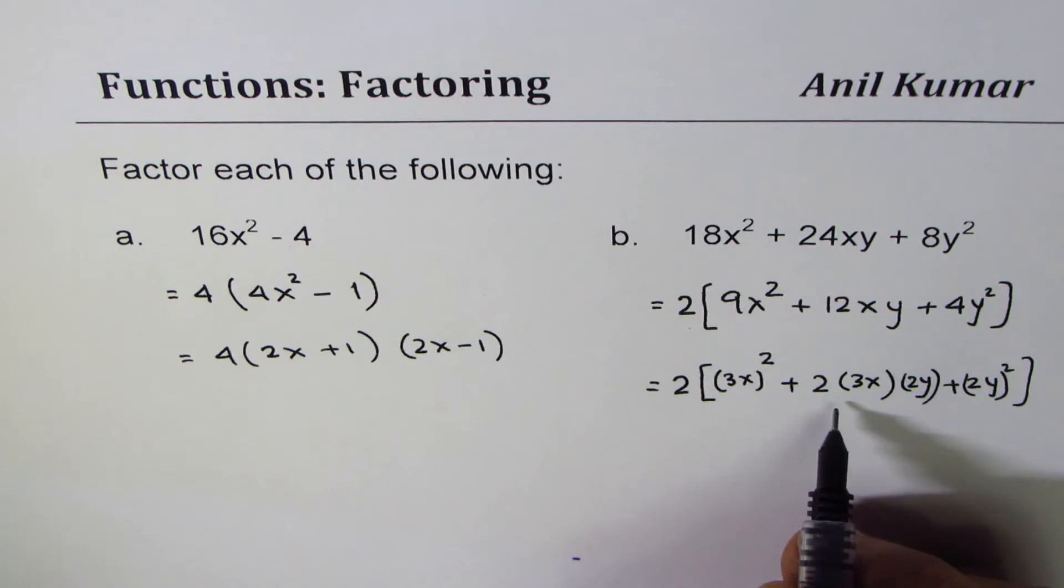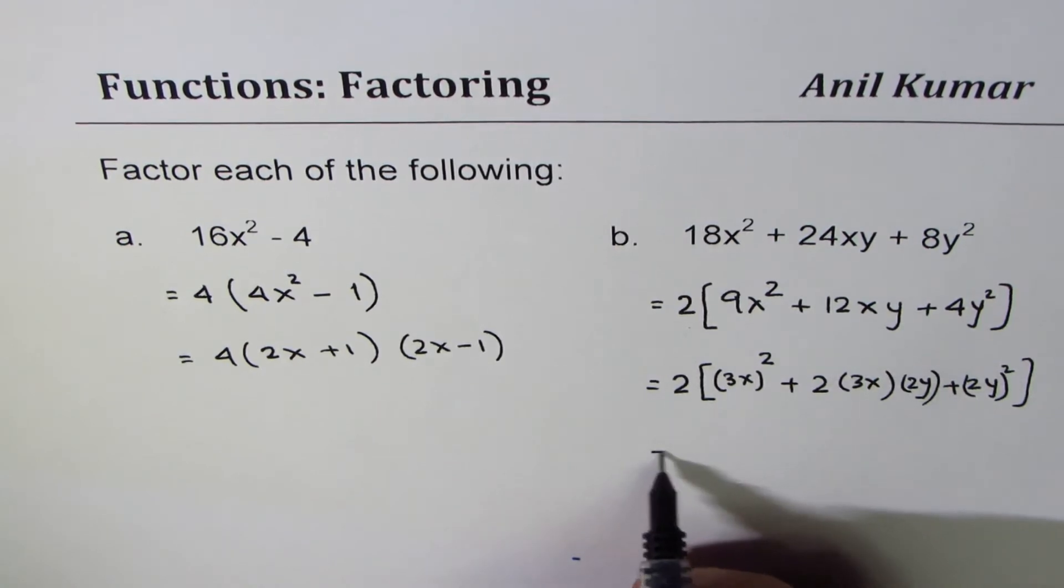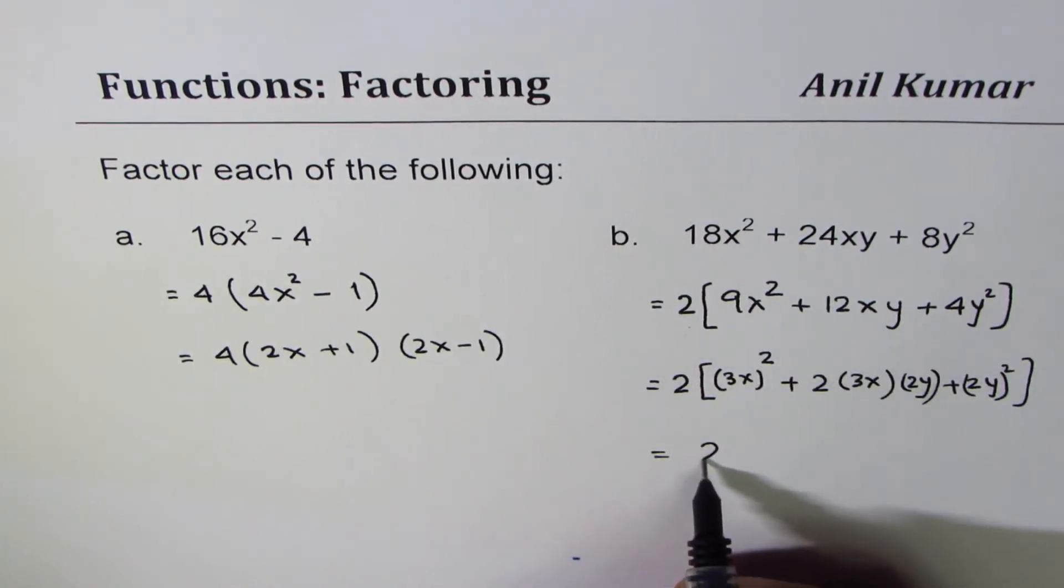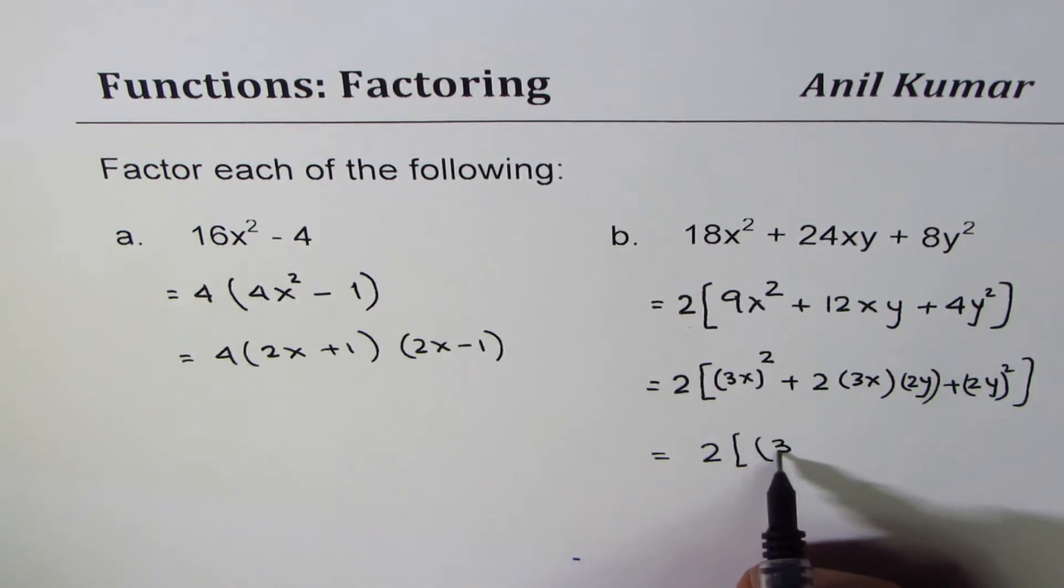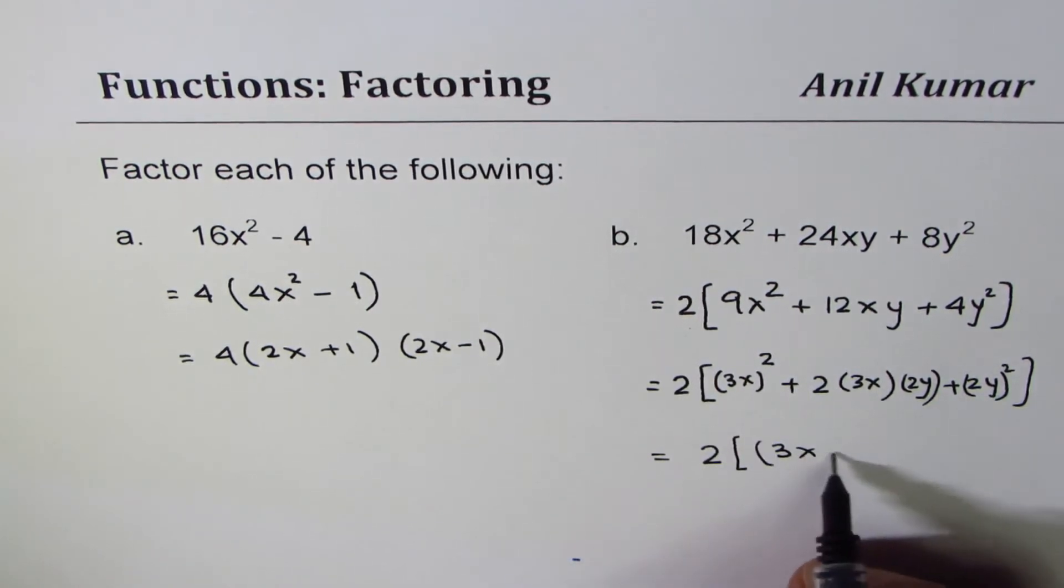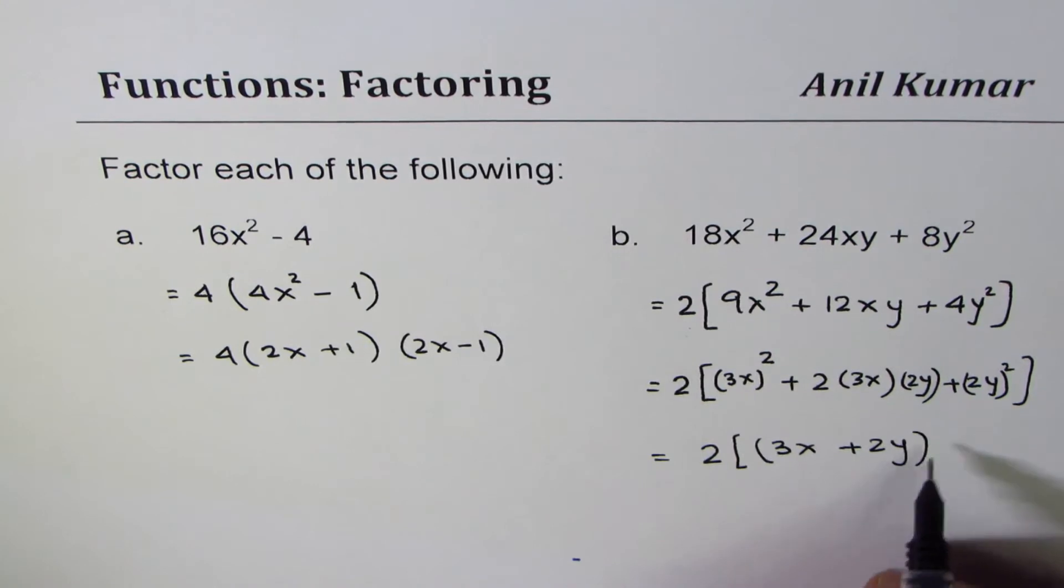That gives us 2 times 3 is 6, 6 times 2 is 12, so 12xy. Therefore we could write this as a perfect square. So it becomes 2(3x + 2y)².